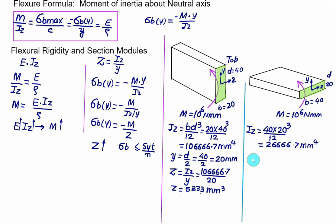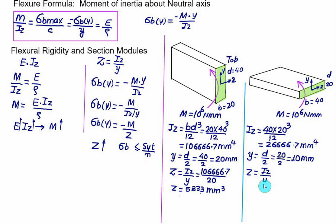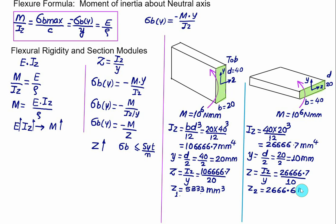For the second section, the larger dimension is horizontal and the smaller dimension is vertical. The top fiber is at Y equal to D/2, which is 20/2 equal to 10 mm. So section modulus Z2 equals IZ divided by Y, which is 26,666.7 divided by 10, giving Z2 equal to 2666.6 mm cubed. This is less than Z1 of 5333.3 mm cubed.